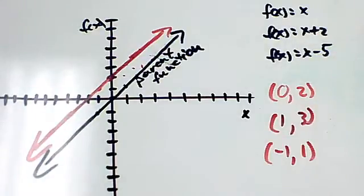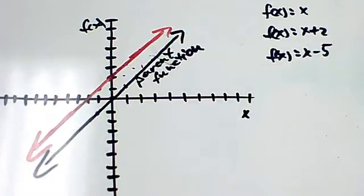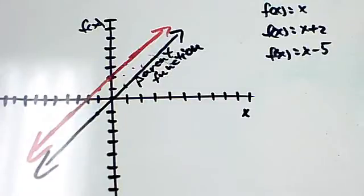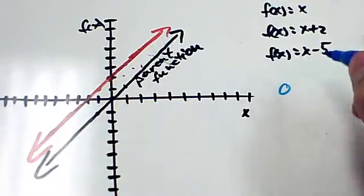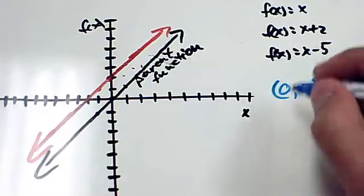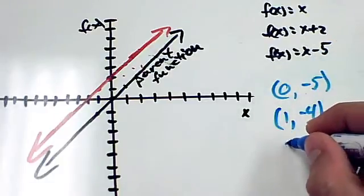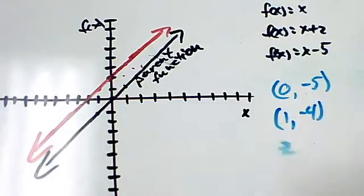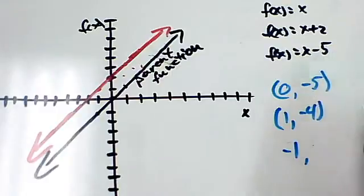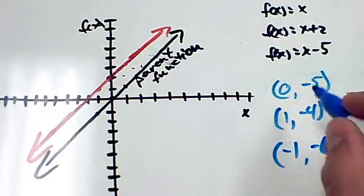Let's graph, and I'm going to graph this one in blue, f of x equals x minus 5. So again, let's just plug in points. When x is 0, we have 0 minus 5 is negative 5. When x is 1, 1 minus 5 is negative 4. And when x is 2, or excuse me, let's use negative 1 so we can get a negative value. When x is negative 1, we have negative 1 minus 5 is negative 6. So let's plot these points.